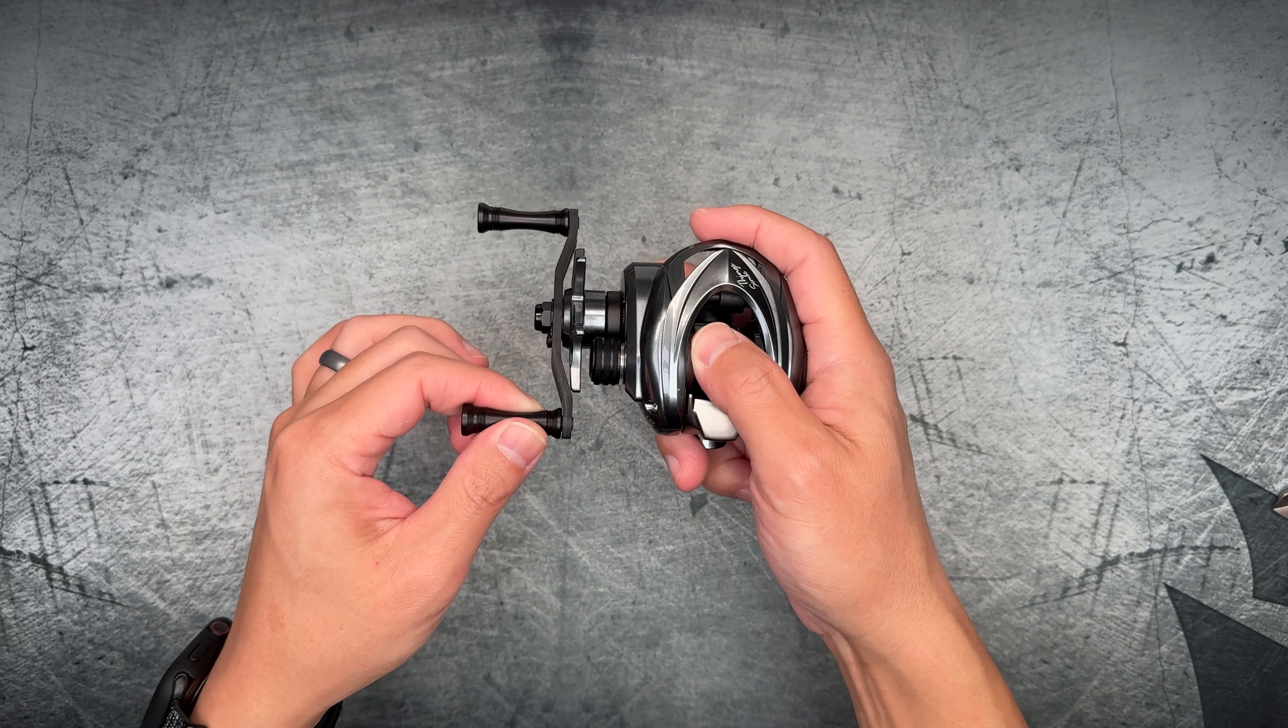We just need to see where all the parts go and you can use like Google Image Translate to translate all of these Chinese terms. But we're gonna put that aside. So it's nice to see that they're including that in the box because a lot of cheaper reels nowadays actually don't do that.